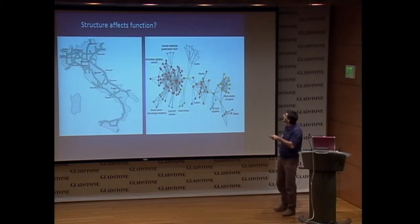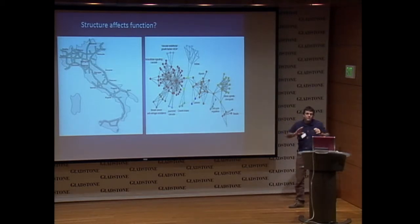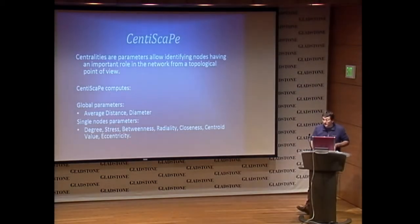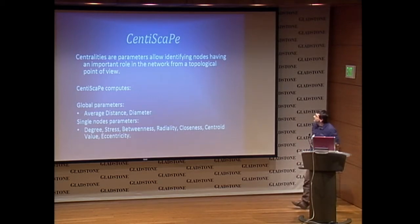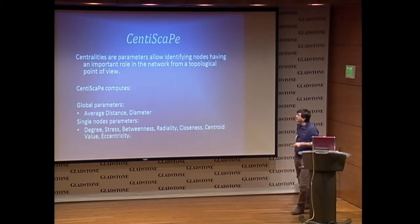Usually you are not wrong saying that Milano and Rome are important nodes in this network. And the same is for the biological network — you can imagine that something happens here or here. So if we analyze the structure of a network, we can extract information. One of the methods uses centrality parameters, and CentiScape is a plugin that calculates several centrality parameters.